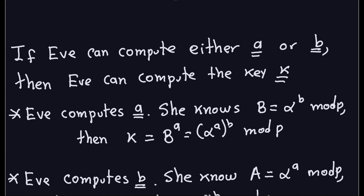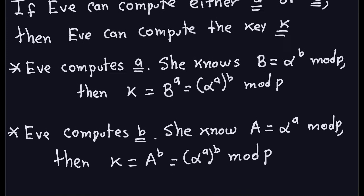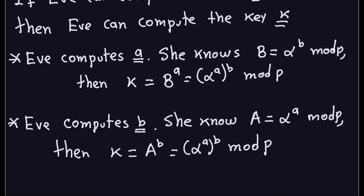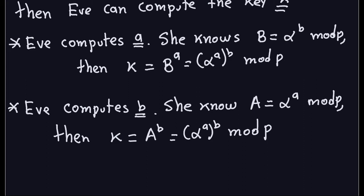If Eve can compute either exponent a or exponent b, then she can easily compute the shared key K. For example, if she knows lowercase a, she also knows that capital B equals alpha to the b modulo P — she knows capital B even if she doesn't know lowercase b. She can then take capital B to the power a, and by the laws of exponents that gives alpha to the ab, which is the shared key. Similarly, if she knows lowercase b, she can take capital A to the power b, since capital A was sent through the channel, and again compute the shared key.